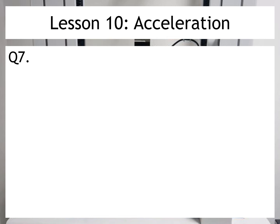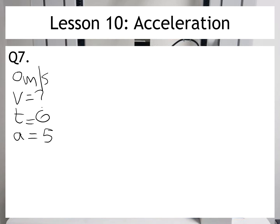On question 7, I know that the starting velocity is 0 metres per second. And then I know that I'm looking for the final velocity — I don't know that. I am told that the time is equal to 6 seconds, and we're told that the acceleration is equal to 5 metres per second squared. So all I need to do now is put the numbers into the equation: a equals change in velocity divided by t.